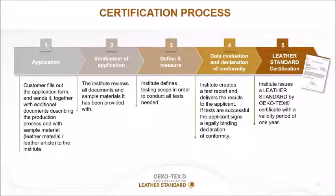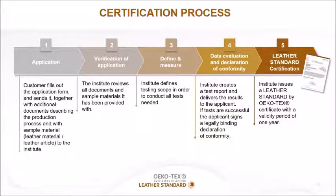Once the certificate is issued, it has a validity of one year and can be renewed annually. During renewal, the license number obtained with the first certification remains the same as long as you work with Ökotex. The validity date of the certificate does not change regardless of whether you start renewal slightly early or late. All information provided to the institute is kept confidential, as all Ökotex institutes are accredited.